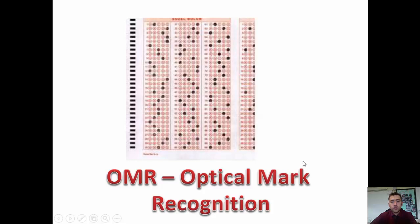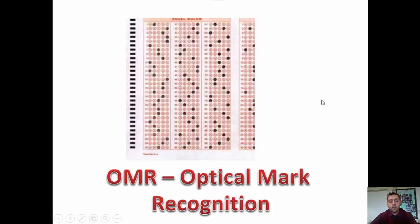An OMR is Optical Mark Recognition. It's often seen on lottery tickets — you circle or colour in squares or circles to identify what numbers or answers you've chosen in a multiple choice test. It's then read through an OMR reader, which knows the position of all your selections.